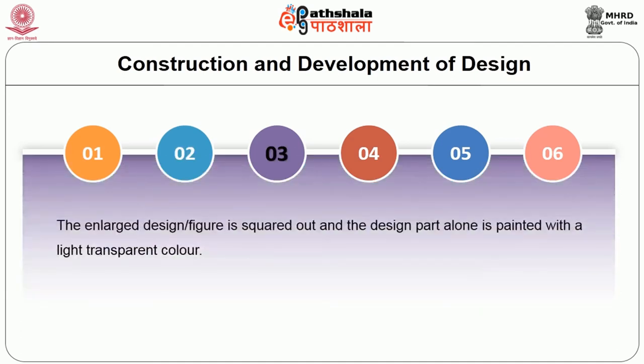The third stage is that the enlarged design has to be squared out. Since ends and picks are shown in rectangular cells, smooth curves are possible only if the set of the cloth is fine. The figure enlarged on the point paper must be squared out on the edges to give a clear definition of the figure. Then, for convenience, the positive and negative of the design must be identified — which part the designer wants to emphasize — typically using a light color paint for one and leaving the other blank.